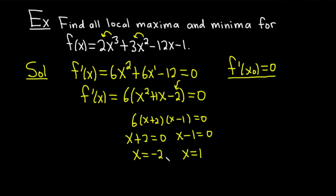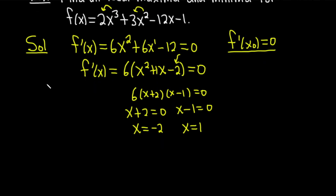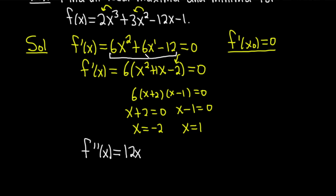Now we take these values and plug them into the second derivative to check whether it's positive or negative. If the result is positive, we have a min; if negative, we have a max. Our second derivative f double prime of x comes from differentiating 6x squared plus 6x minus 12 again: 2 times 6 is 12, subtract 1 from the exponent to get 12x; the derivative of 6x is 6; and the derivative of minus 12 is 0. So f double prime of x equals 12x plus 6.